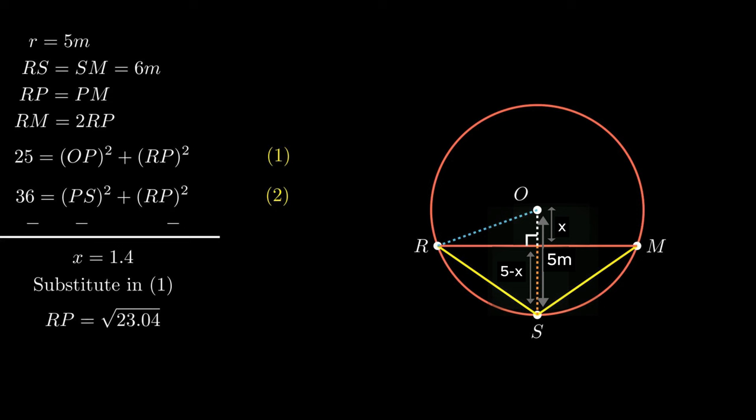Taking the square root, RP = √23.04 = 4.8 meters. Therefore, the length of segment RM becomes twice of 4.8, which equals 9.6 meters. Thus, the distance between Reshma and Mandeep is 9.6 meters. That was it for this video — see you in the next one. Thank you for watching.